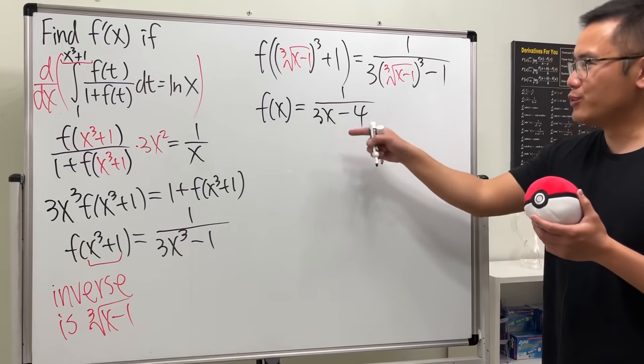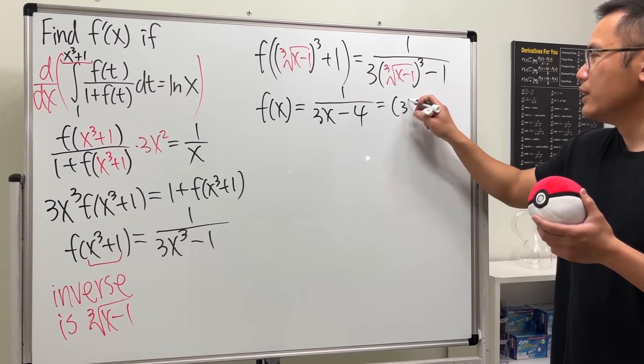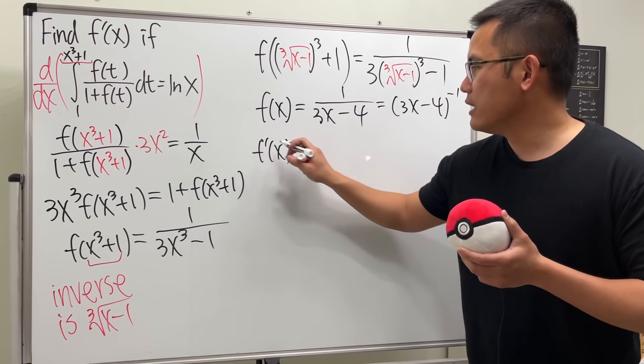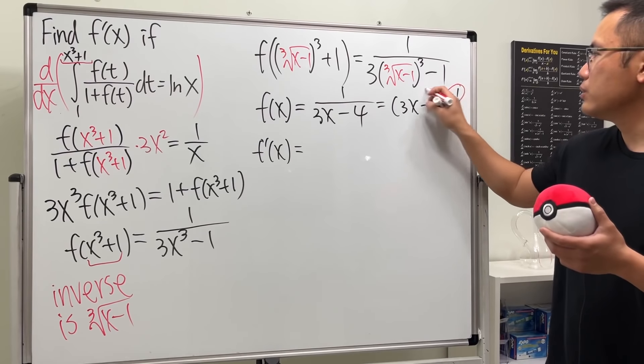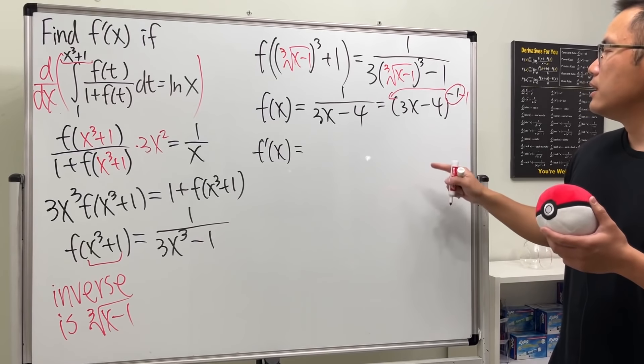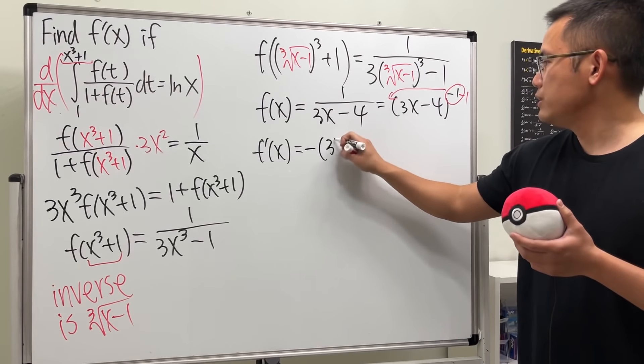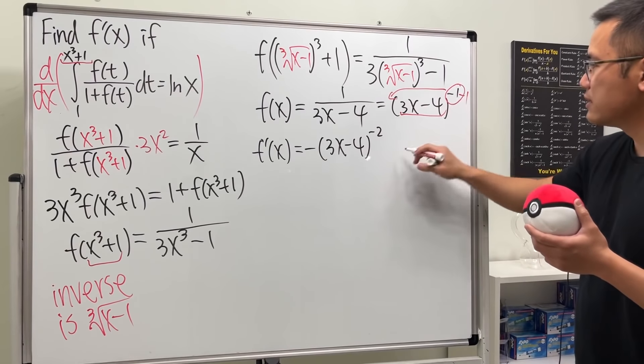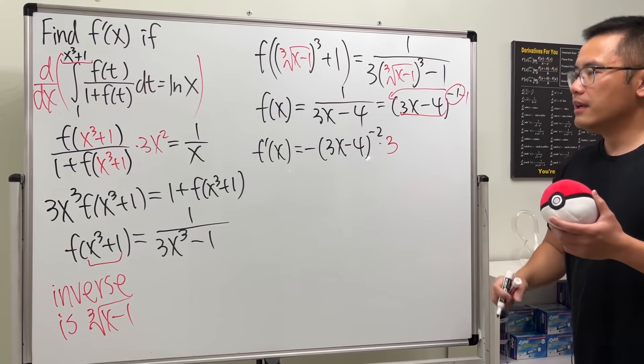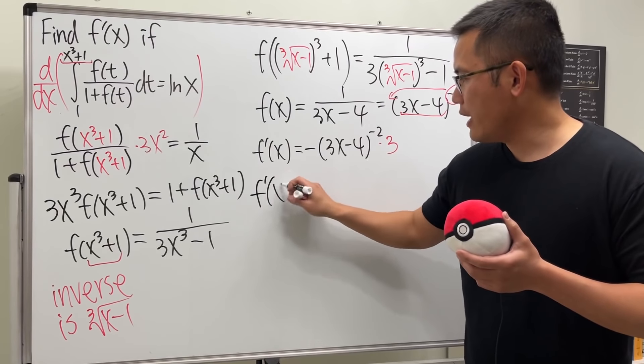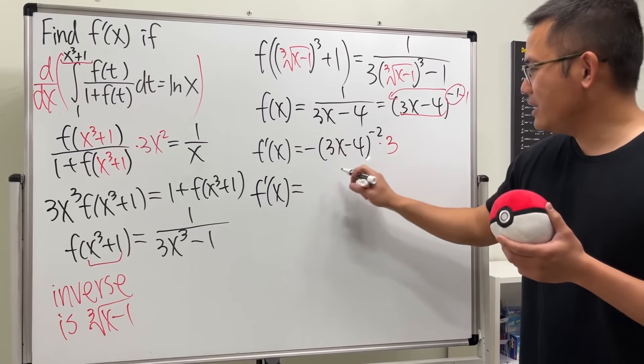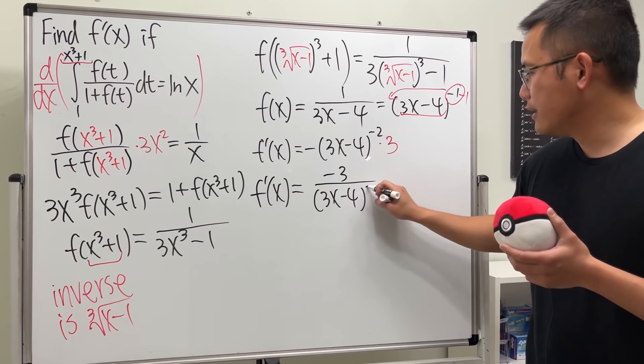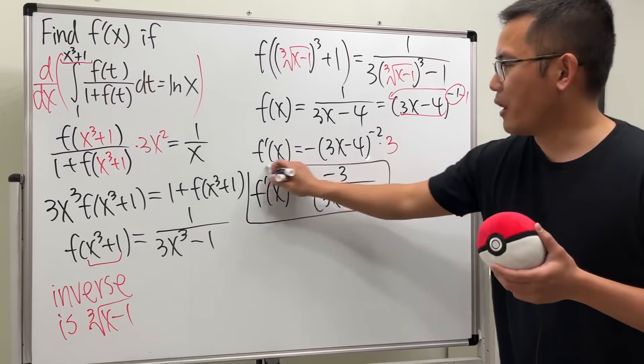This is not bad at all because we can rewrite this and we will get (3x - 4)^(-1). So that we see the derivative of f is just going to be bring the power to the front and then minus 1. And we will get -(3x - 4)^(-2). And of course, don't forget the chain rule. So multiply by the derivative inside, which is multiply by 3. So ladies and gentlemen, our f'(x) is equal to -3 over (3x - 4)^2 like this.